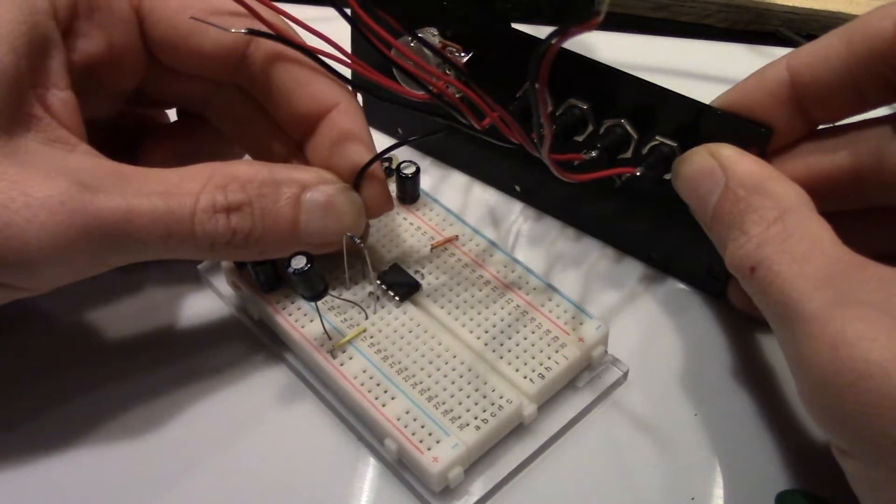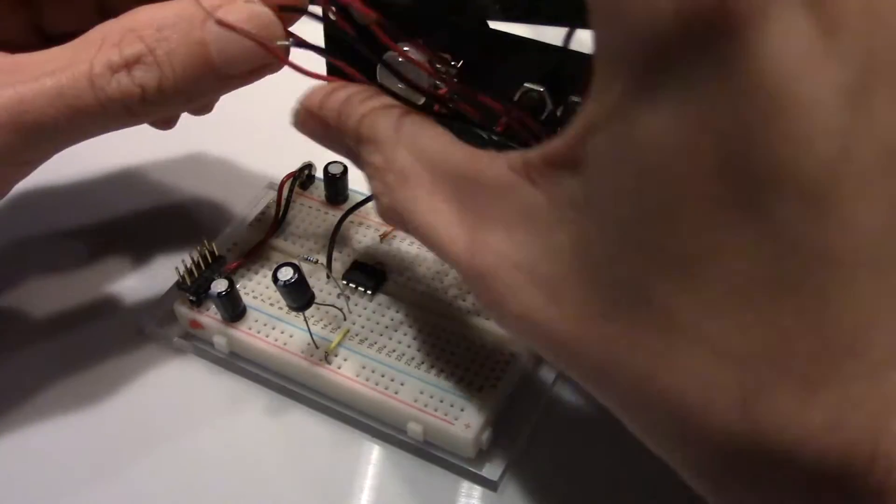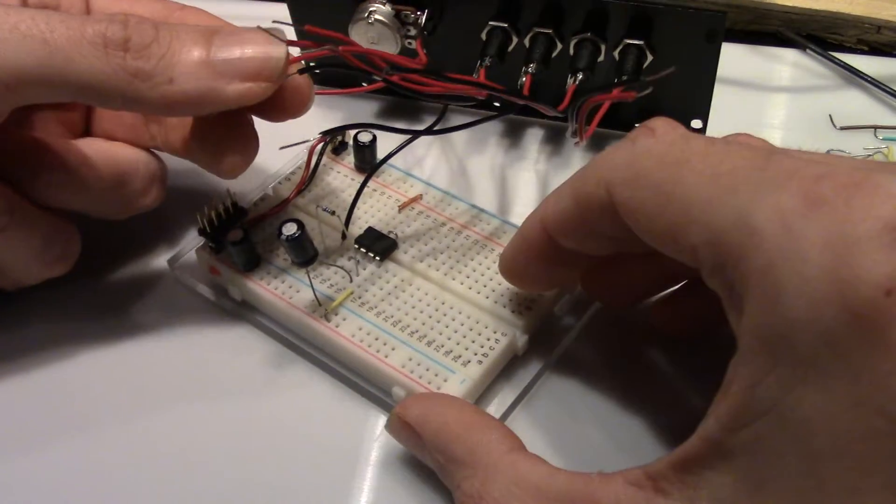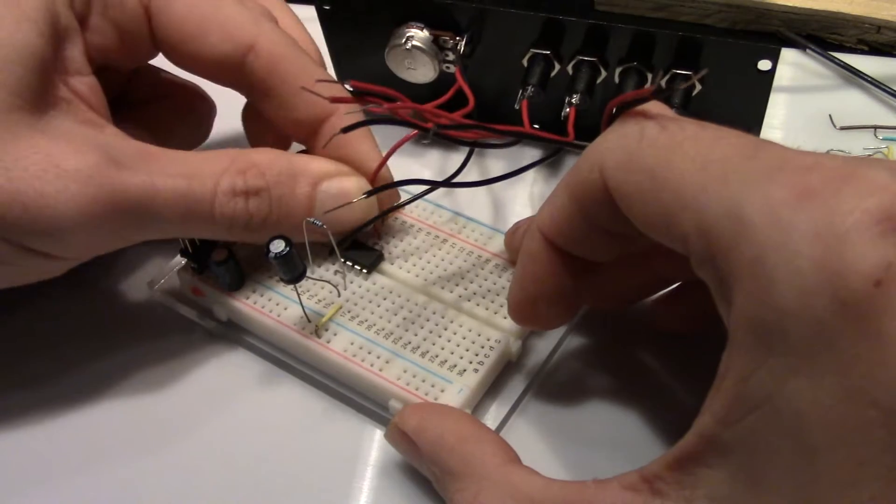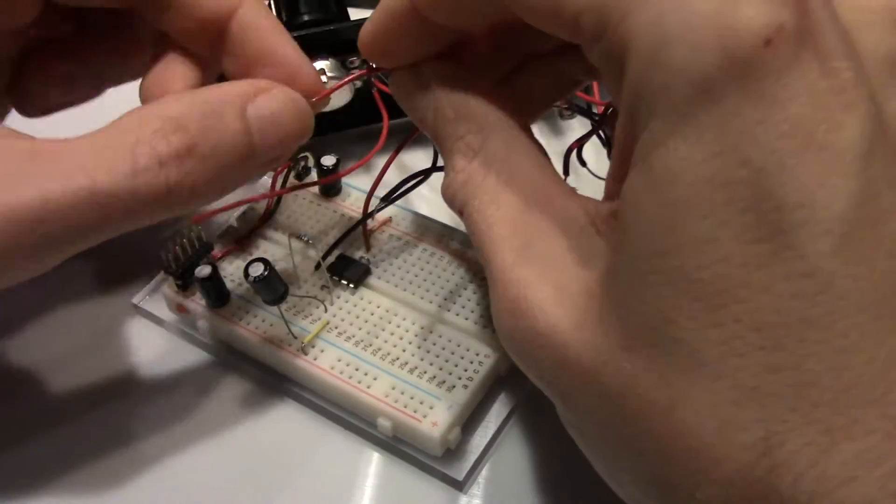First, we connect the black wire of the potentiometer to the 100 ohm resistor. Then the middle wire to pin 7 on the chip. Then connect the red wire of the first jack to pin 5 and the black wire to ground.